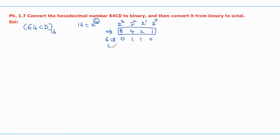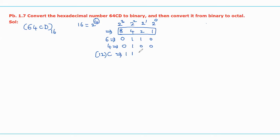Similarly, for 4, its equivalent binary value is 0100. For C — C means its equivalent decimal value is 12 — it becomes 1100. For D, its equivalent binary value is 1101.